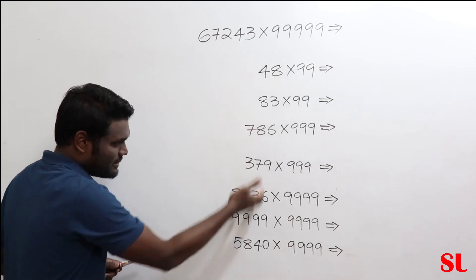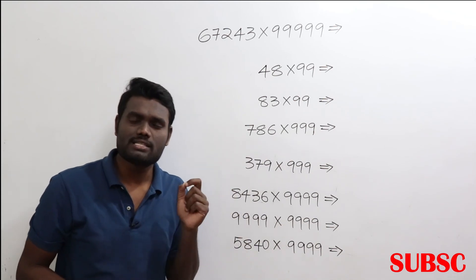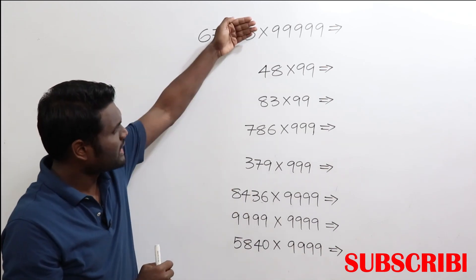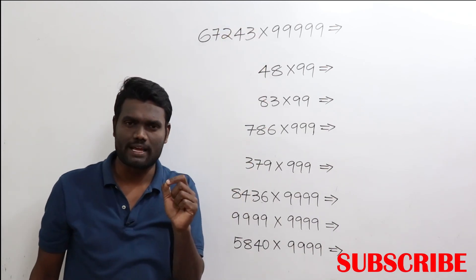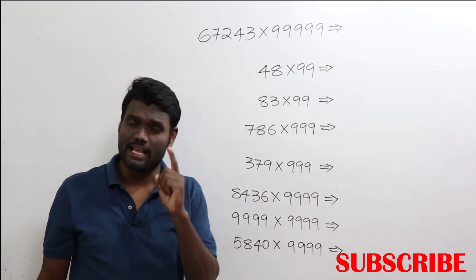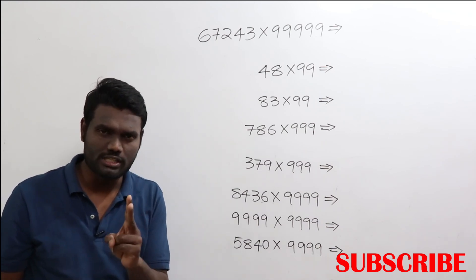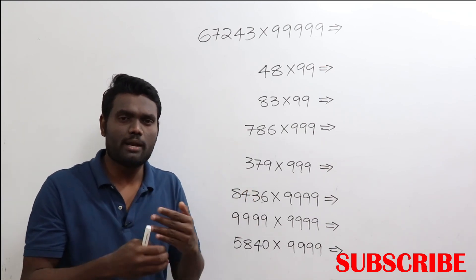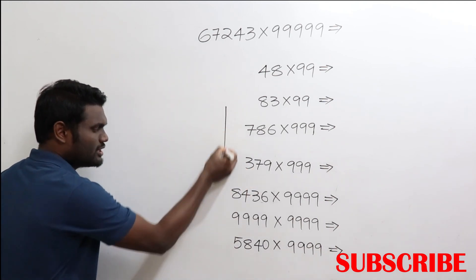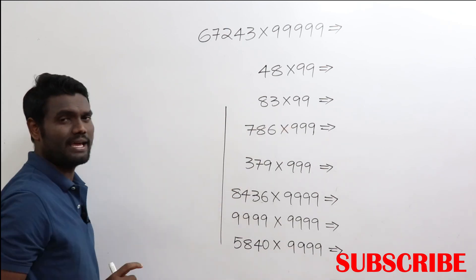Now let us look at how to multiply these numbers in just two seconds of time. If you observe here, all these multiplications are with respect to 9, 99, triple nine, and so on. These numbers can be multiplied in just two seconds of time. Before I say the logic, I will first show you how it applies to smaller numbers, so that we can then apply it to bigger numbers as well.